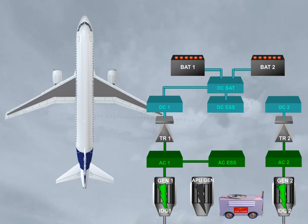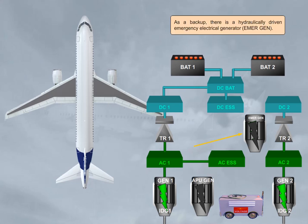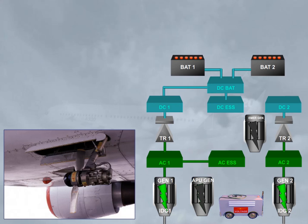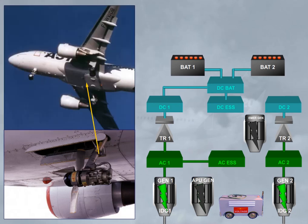As a backup, there is a hydraulically driven emergency electrical generator, EmerGen. The hydraulic power to drive the emergency generator is provided by a RAM air turbine, RAT, located in the belly fairing, which extends in case of severe electrical or hydraulic failures.